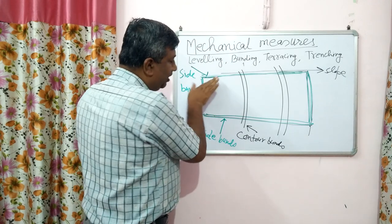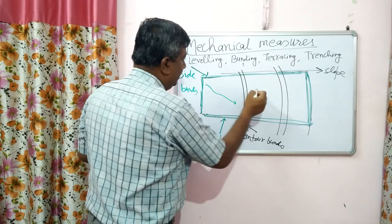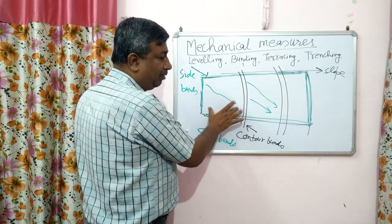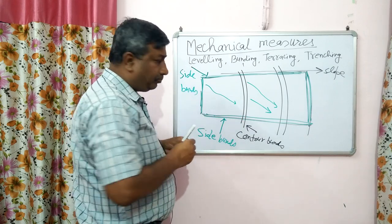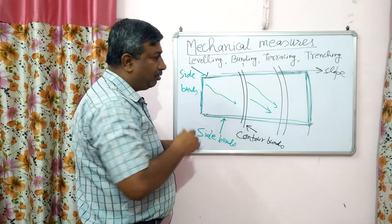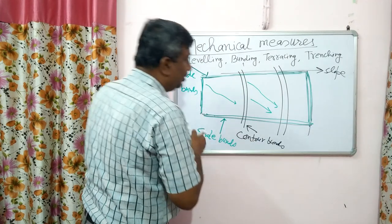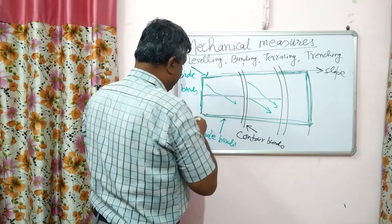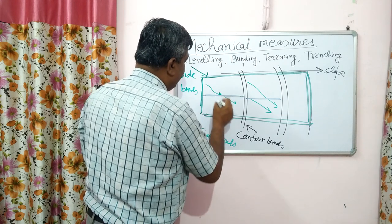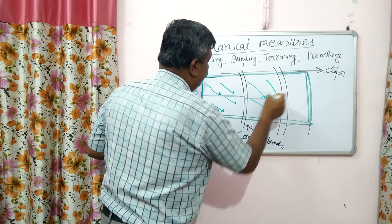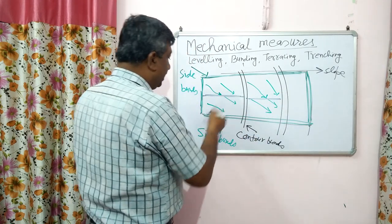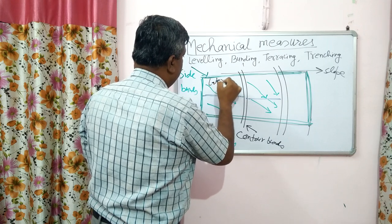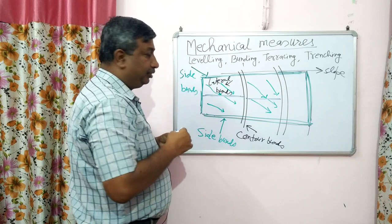There may be a condition where water flows in one direction and accumulates at a particular area, causing waterlogging on one side while the other side is dry, and excess water may break the bund. To avoid concentration of water on one side, bunds are made along the slope in this direction so that water is retained in portions, preventing accumulation to one side. Such bunds are known as lateral bunds. The objective of lateral bunds is to prevent the accumulation of water.